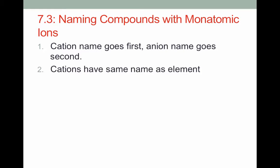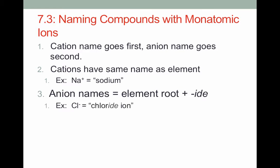The cation name will be the same as the name of the element. For instance, the Na+ ion, the sodium ion, is just called sodium. Anion names on the other hand do have a small change. Here we just take the root of the element and add -ide. For example, Cl- is an ion of chlorine, so we take the chlor and change the ending to -ide to give us chloride.